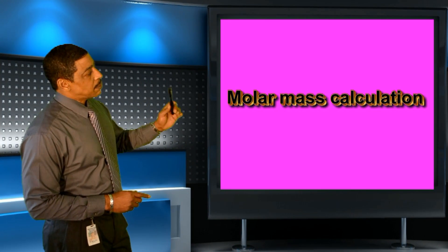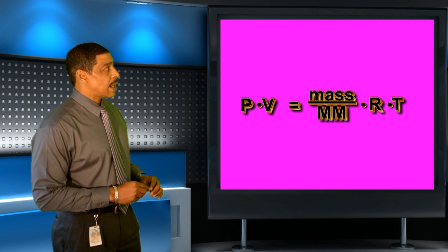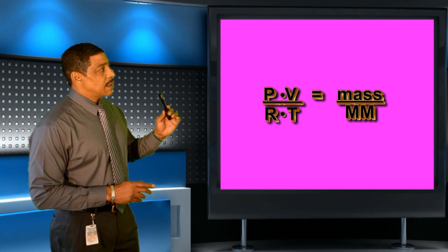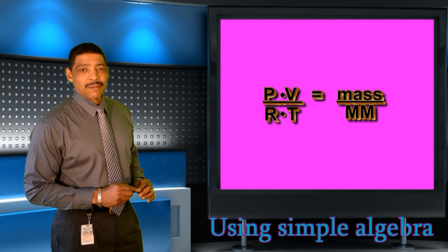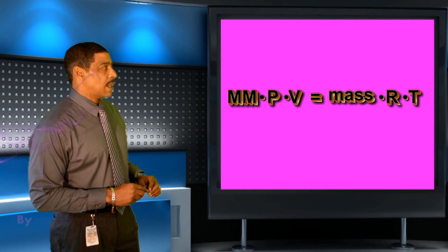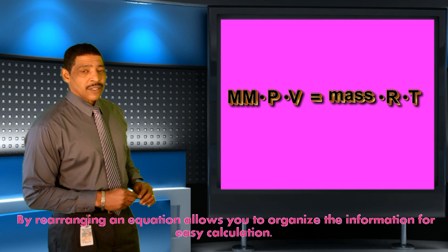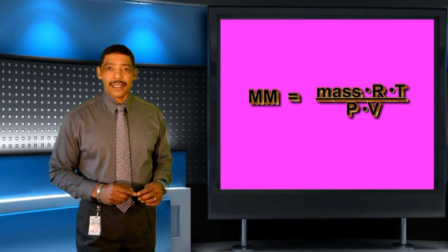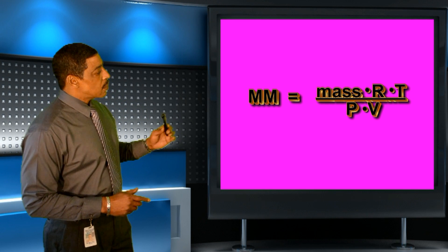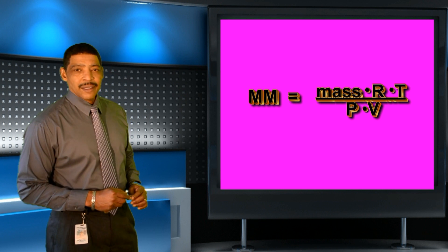To solve for the molar mass of a gas, consider the following, where P times V is equal to the mass divided by the molar mass times R times T. Dividing through by RT will yield: P times V divided by R times T equals the mass of the gas divided by its molar mass. Now we cross multiply: molar mass times P times V is equal to mass times R times T. And to solve for the molar mass of the gas, we divide by P times V. The molar mass of the gas will equal mass times R times T divided by P times V.